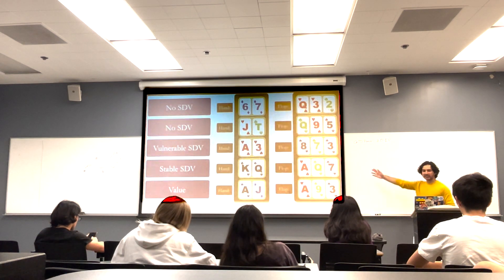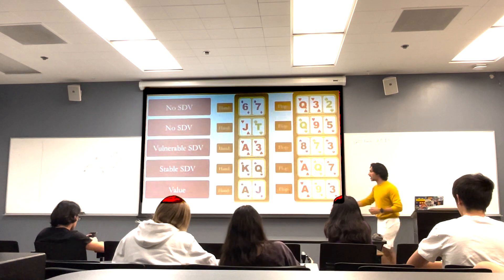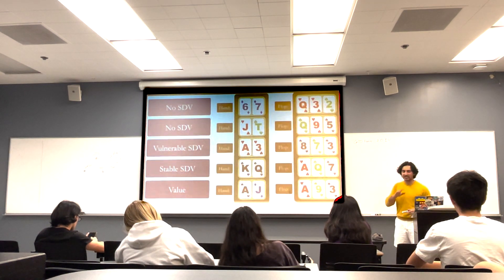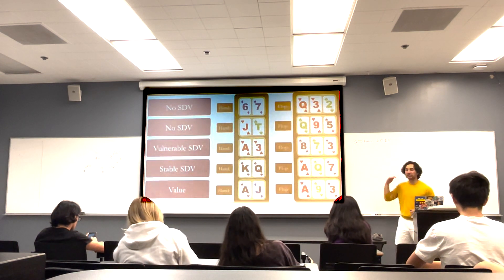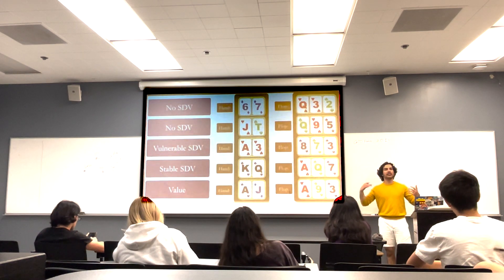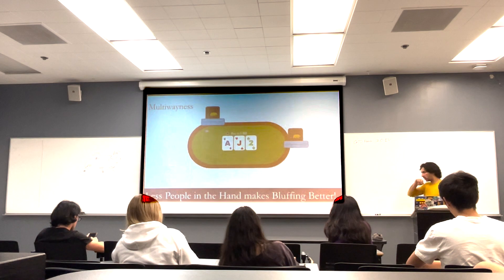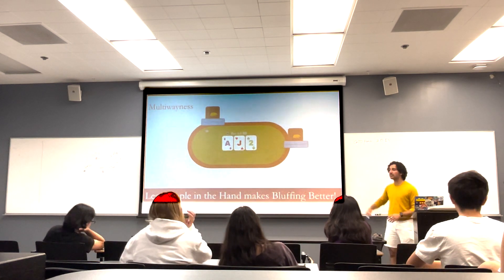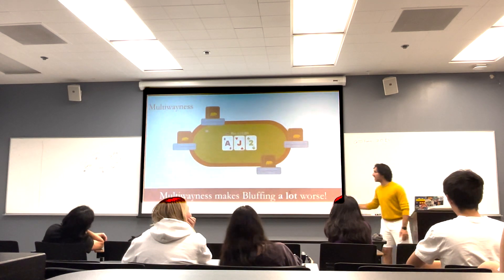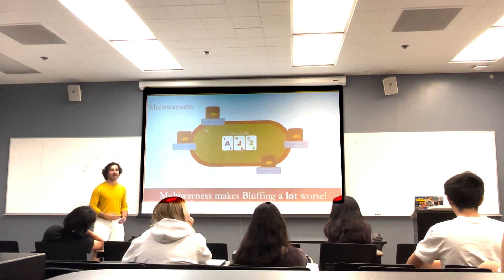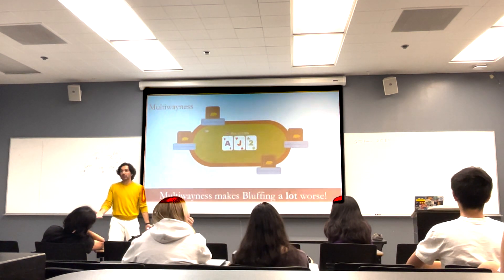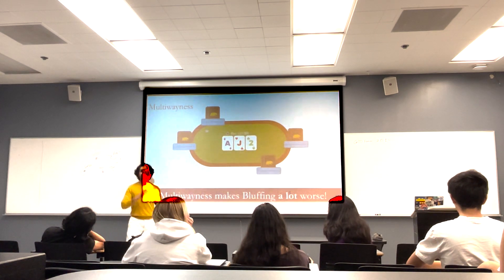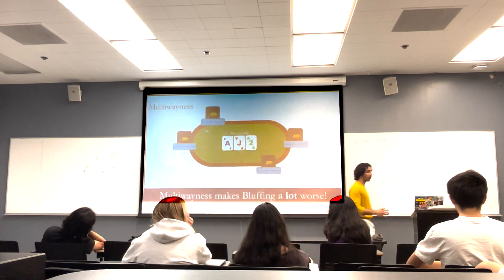Some examples: six-seven on a board of queen-three-two has absolutely no showdown value, versus ace-jack on a board of ace-nine-three having a lot. Vulnerable showdown value with ace-three gives us bottom pair — not great. Stable showdown value with king-nine gives us middle pair and a king that could land us top pair if a king comes — it can't become much weaker. For multiway pots: if there are more people, it's much harder for us to bluff. Each person has a chance to call, and rolling those dice multiple times makes it much more likely someone calls versus heads-up where we only roll once.